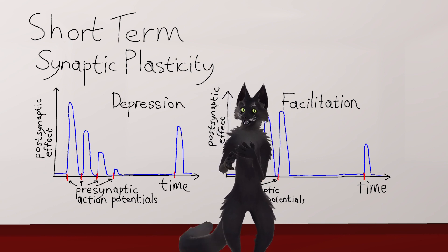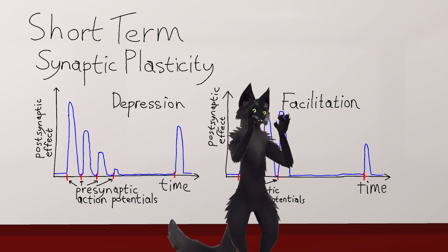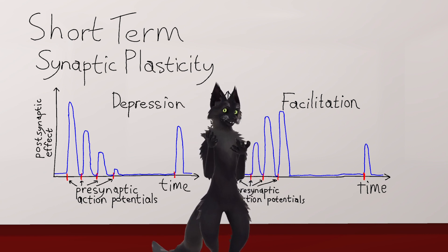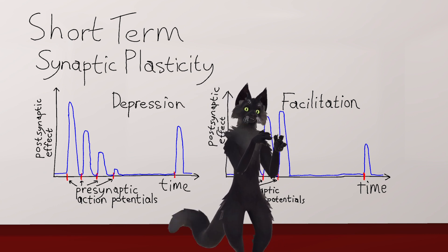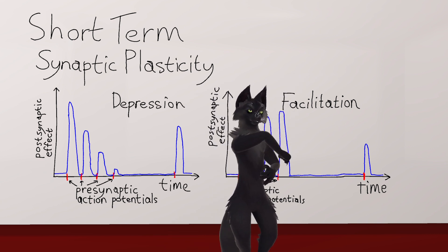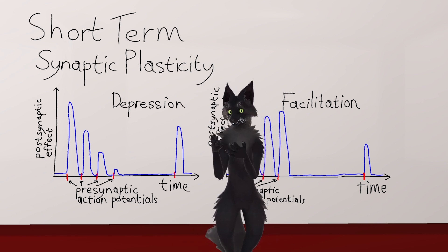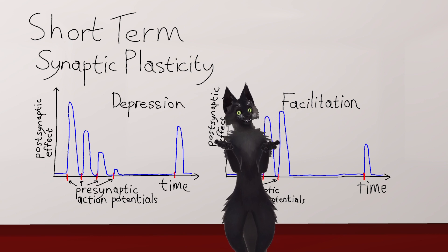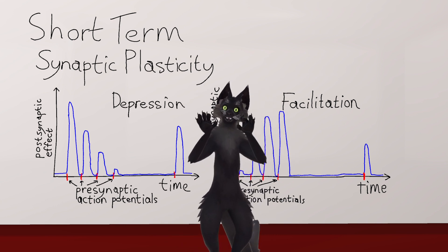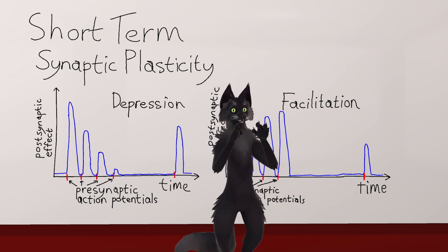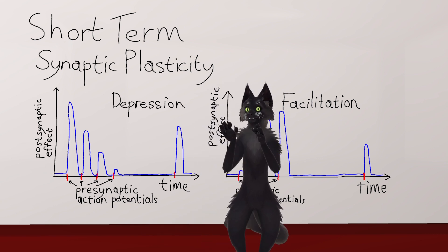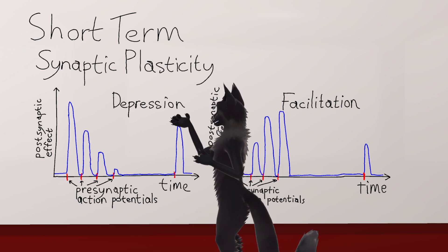Depression can also be caused by something called receptor desensitization, which is when the receptors get stuck in a closed state. The postsynaptic dendrite has ion channels embedded in its cellular membrane near the synapse — little doorways that can open when the synapse activates and let electricity into the neuron in the form of electrically charged ions, causing the postsynaptic effect. After the synapse is done activating, those doorways close to cut off the flow of electricity. But sometimes those doors get slammed shut too hard and can actually get stuck closed, taking a few seconds to wiggle themselves free. They're not broken — just a little jammed up — and that can cause this depression effect.